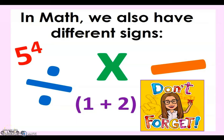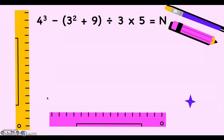Good day everyone. Today we will be talking about GEMDAS. As you can see here, there are a lot of signs or operations, and when these signs are put together in one equation, it follows a certain rule — and that rule is the GEMDAS rule. We have here an equation: 4 to the power of 3 minus open parenthesis 3 squared plus 9 close parenthesis.